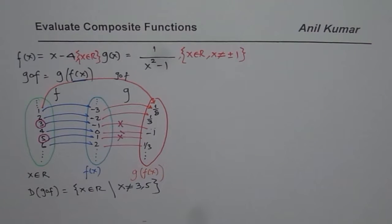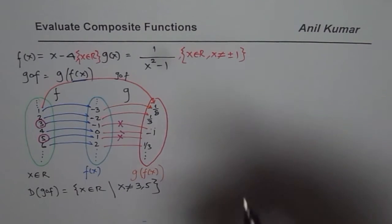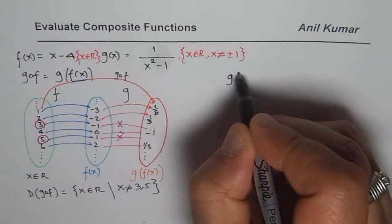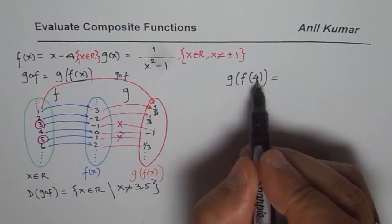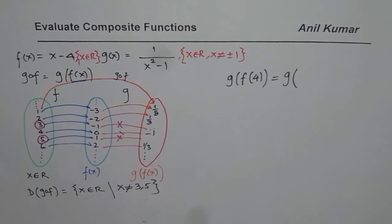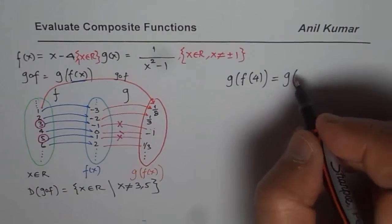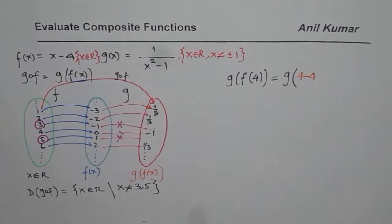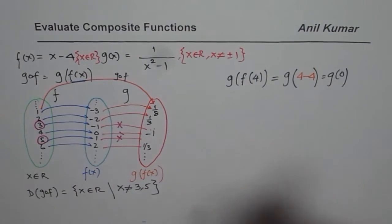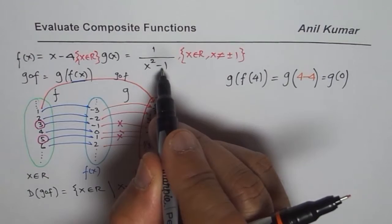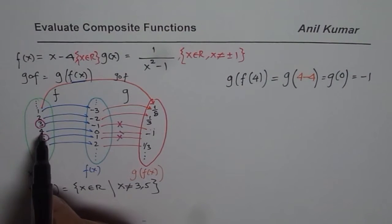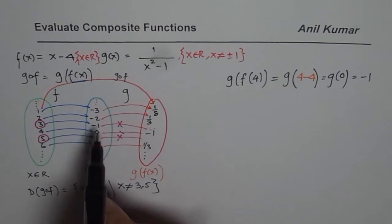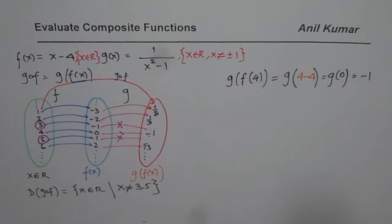To evaluate, let us go through the steps once again. If we have to evaluate g of f of 4, first we find f of 4: substitute 4 into f of x, giving 4 minus 4, which equals 0. So g of f of 4 equals g of 0. Now substitute 0 into g of x: 1 over 0 squared minus 1 equals 1 over minus 1, giving minus 1. So g of f of 4 equals minus 1.